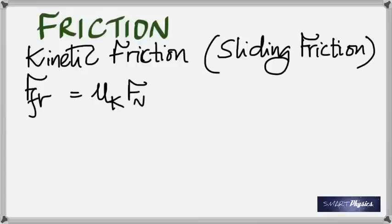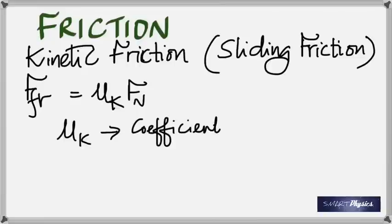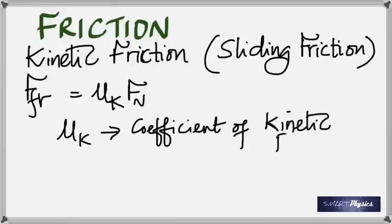The formula for friction is: force of friction equals mu_k times Fn, where mu_k is the coefficient of kinetic friction and Fn is the normal reaction. Similarly, for static friction: F_fr equals mu_s times Fn, where mu_s is the coefficient of static friction.